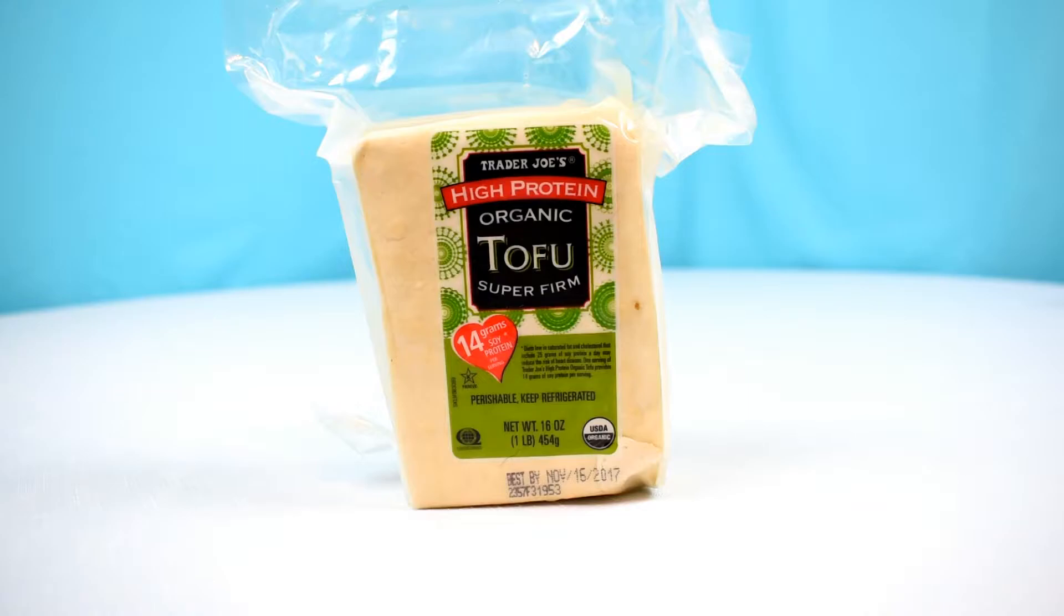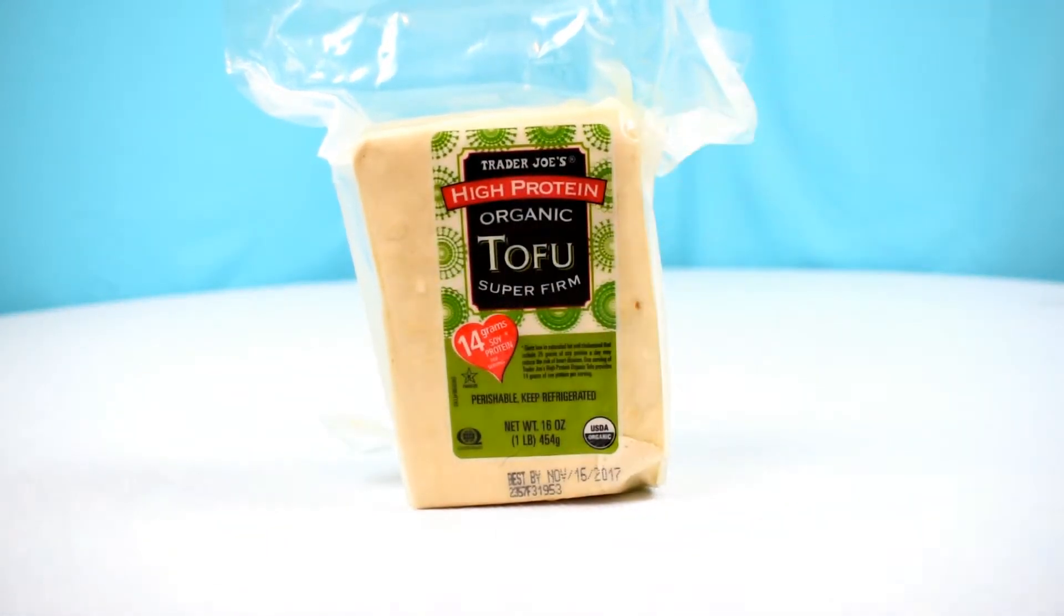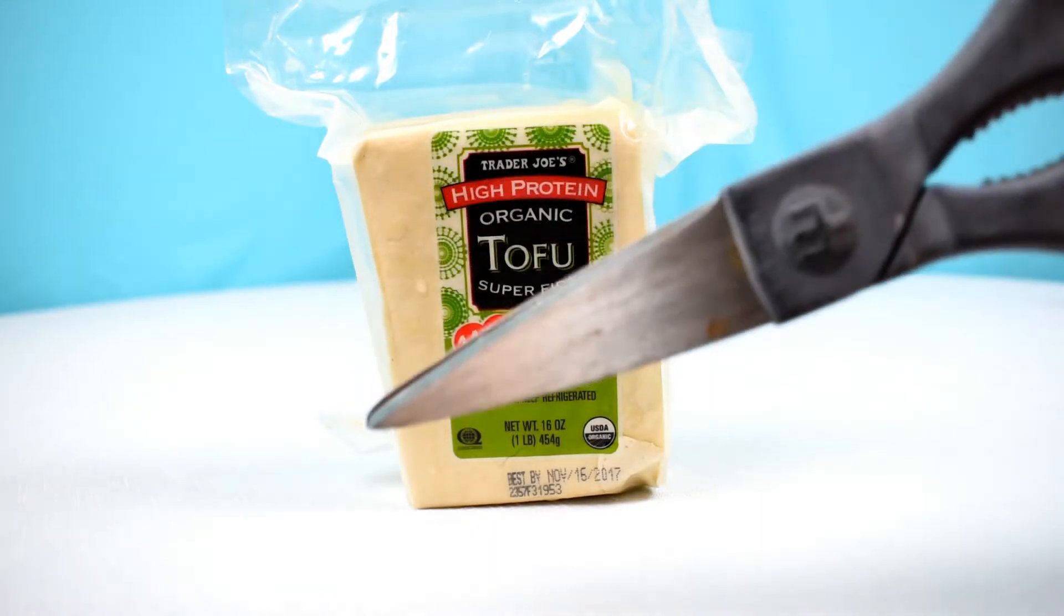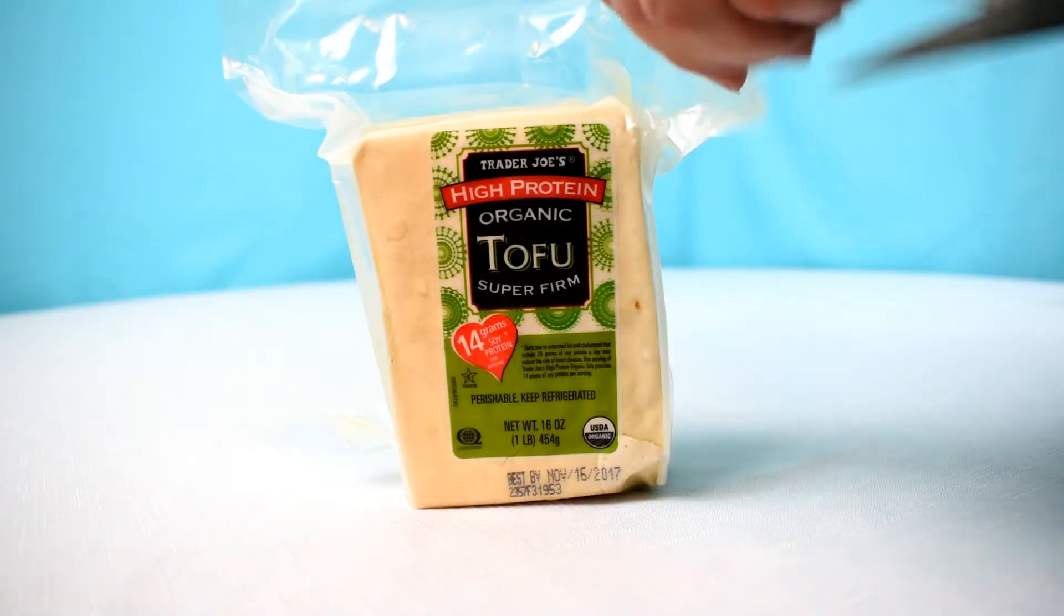So this is the high protein tofu. It is much easier to work with. It is much firmer and thicker than the tofu that is in water. And tofu comes in a wide range of consistencies. This is the one I would recommend for anybody who's new at using tofu, just because it's probably the most like what you're used to eating as a meat replacer. So all I'm going to do here is cut open the tofu.